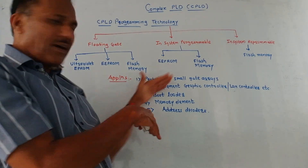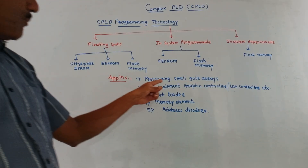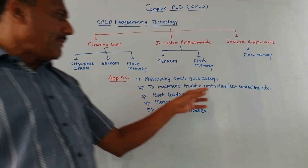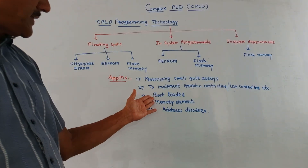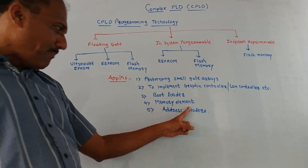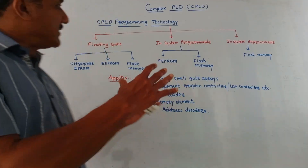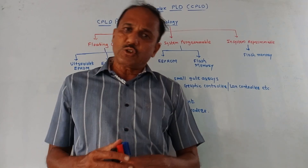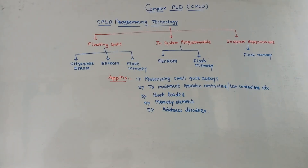Now applications of CPLD. First, prototyping for small logical gate arrays. Next, to implement graphic controllers, then LAN controllers. Next, it can be used as a bootloader, as a memory element, and as address decoders. So this is about the complex programmable logic devices. Dear students, that's it for today's session. Thank you, thanks a lot for watching this video.